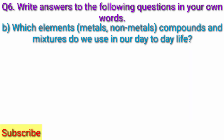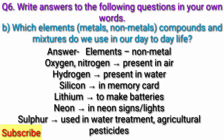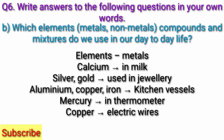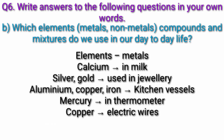Question B: Which elements, metals, non-metals, compounds and mixtures do we use in our day-to-day life? Elements - Non-metals: Oxygen and nitrogen, which are present in air. Hydrogen, present in water. Silicon, used in memory cards. Lithium, to make batteries. Neon, in neon sign lights. Sulphur, used in water treatment and agricultural pesticides. Elements - Metals: Calcium, present in milk. Silver and gold, used in jewelry. Aluminium, copper, iron, used in kitchen vessels. Mercury, in thermometers. Copper, in electric wires.